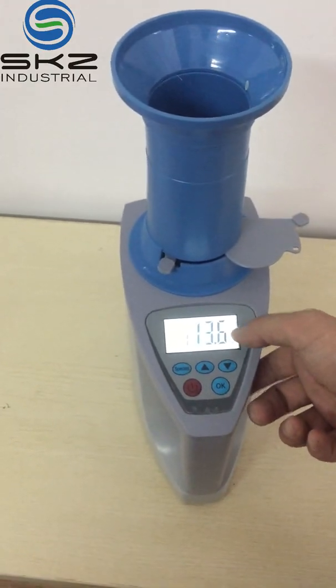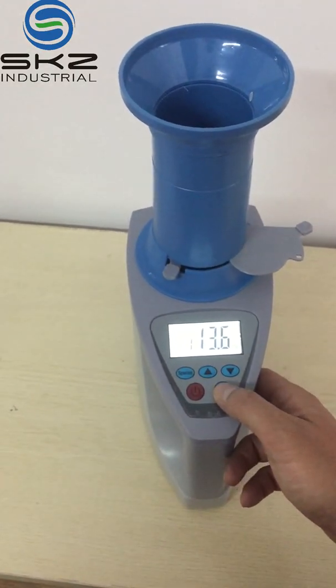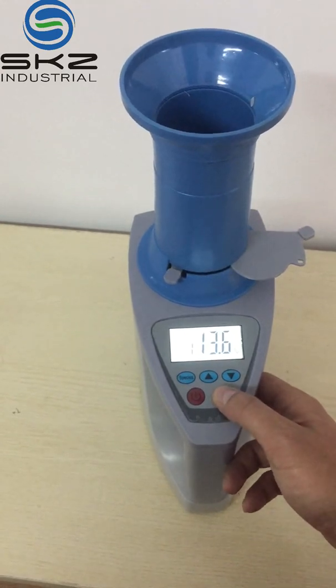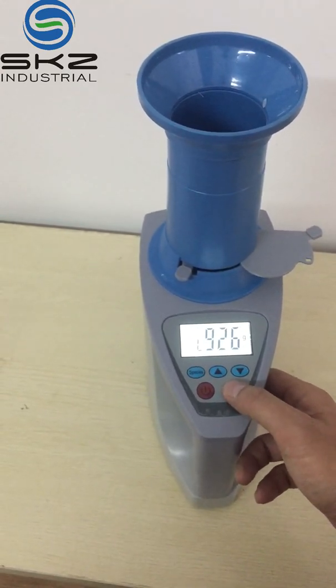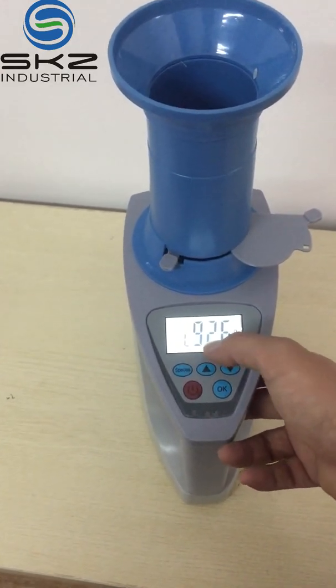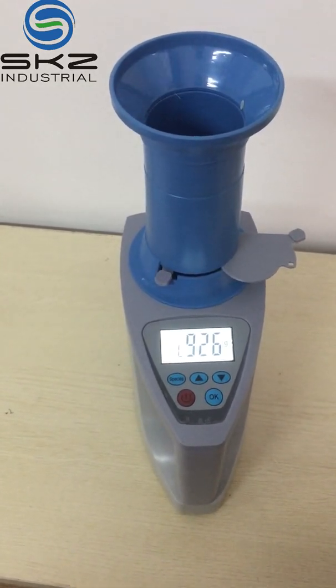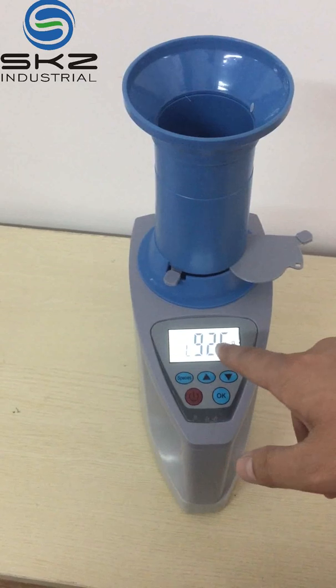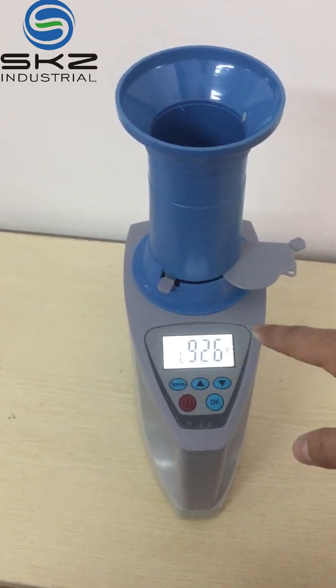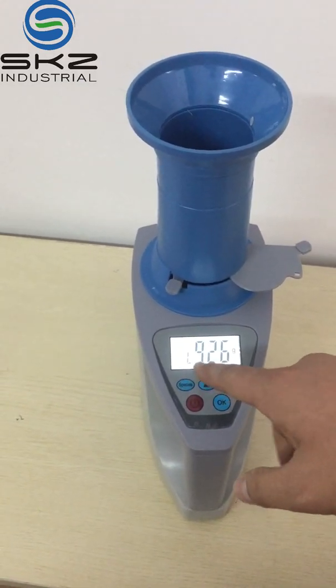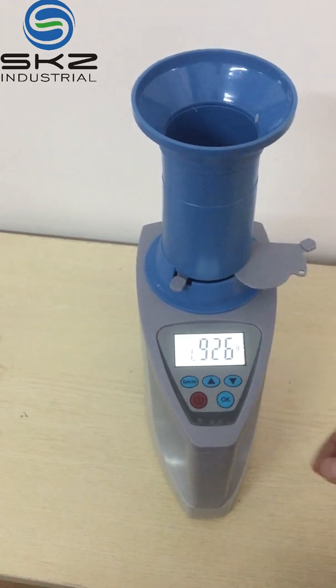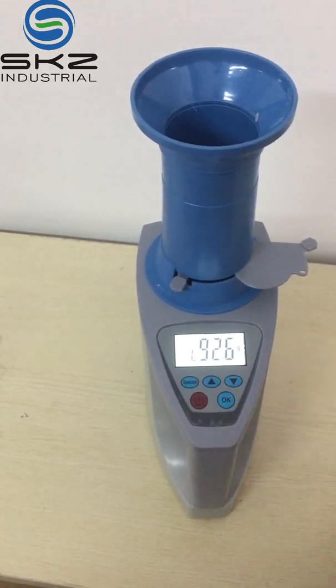This is the moisture. If you press OK again, this press one time is the weight of the sample. Two times is the volumetric weight. This is the volumetric weight. OK. Finish.